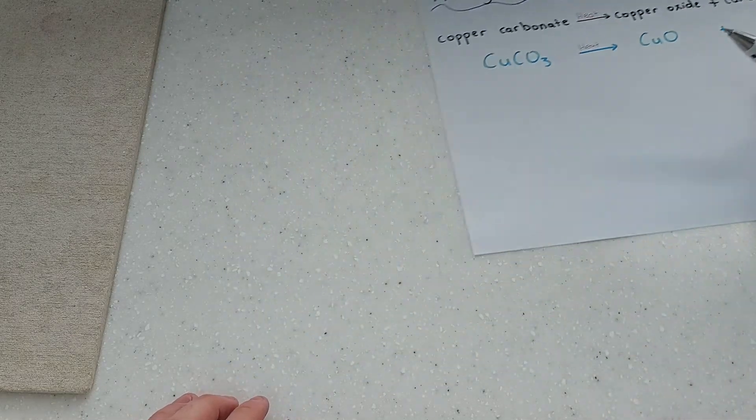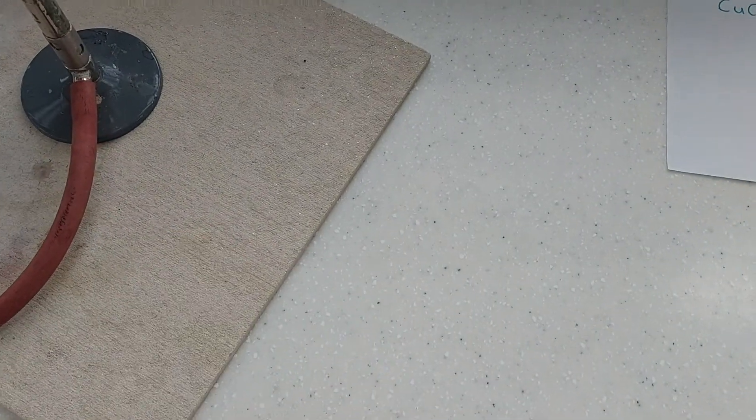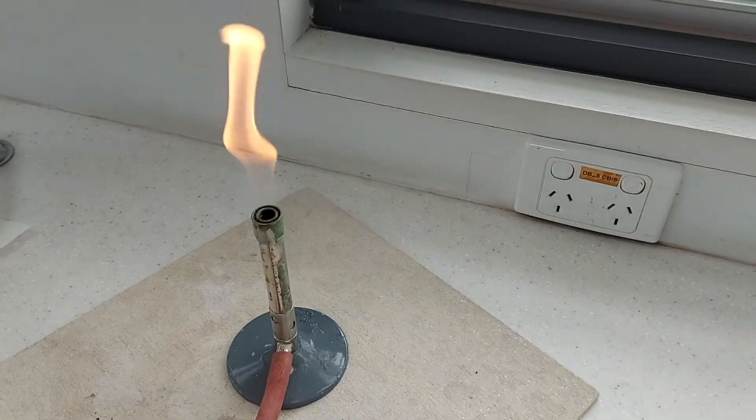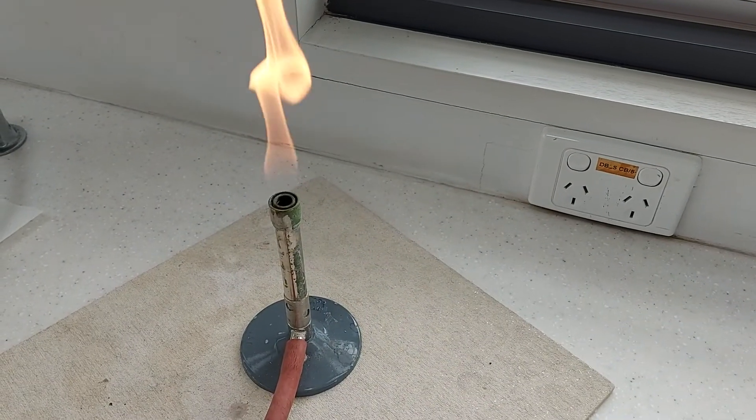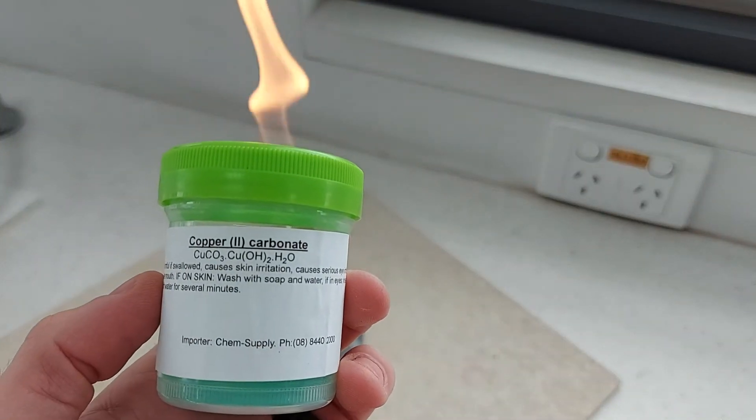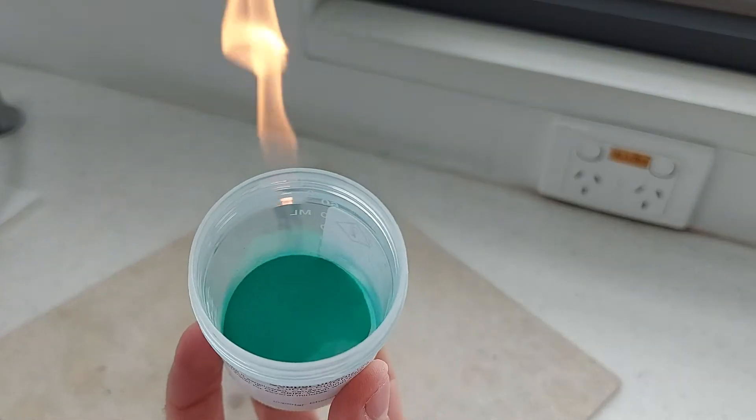I'll put that to the side for just a moment and then I'll get set up with my Bunsen burner flame here. Just adjust the camera. Okay, so I'll be using copper carbonate and it's this very fine green powder.